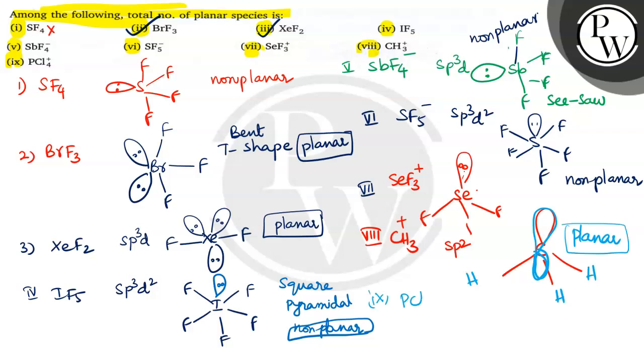The last one is PCl4 plus, tetrahedral SP3 hybridization. Tetrahedral shape is not a planar shape. It is non-planar.